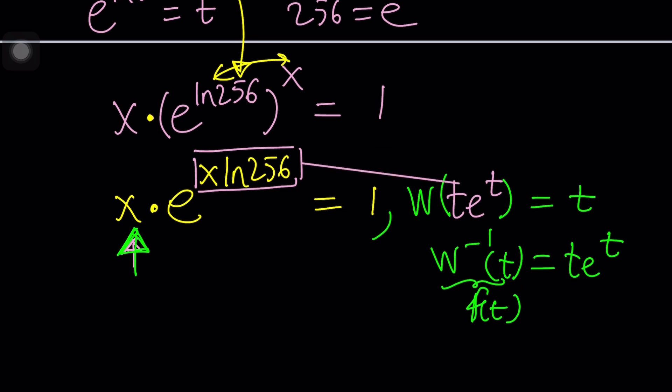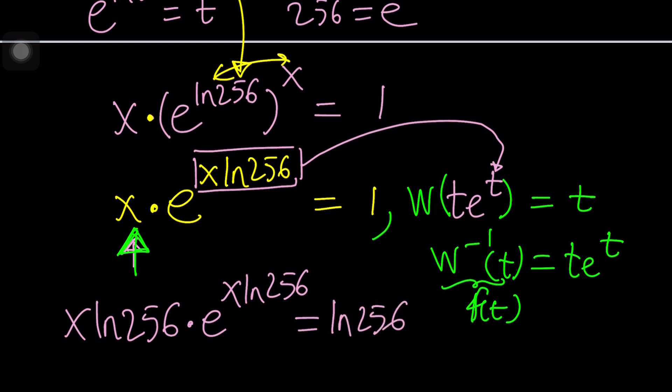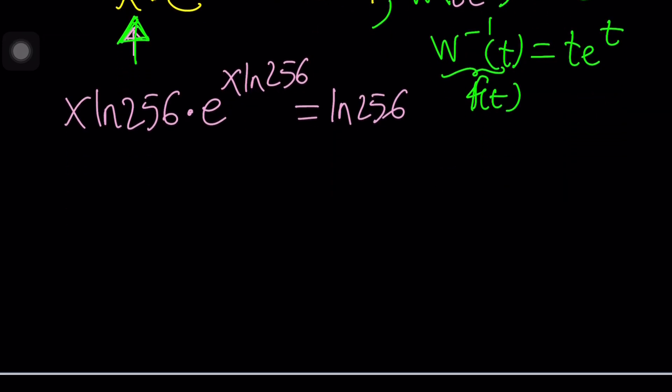I should probably connect it to this one, because that's the base. So we need to multiply both sides by ln 256. And of course, we have to multiply both sides. So this is what we get. We had 1. 1 times ln 256 is ln 256.